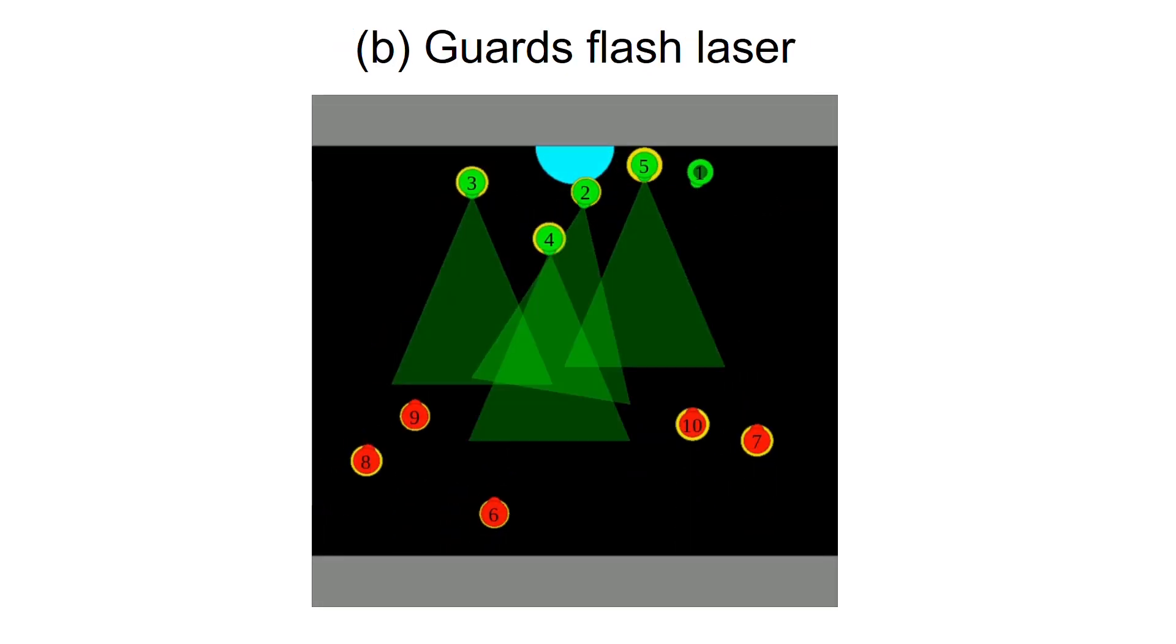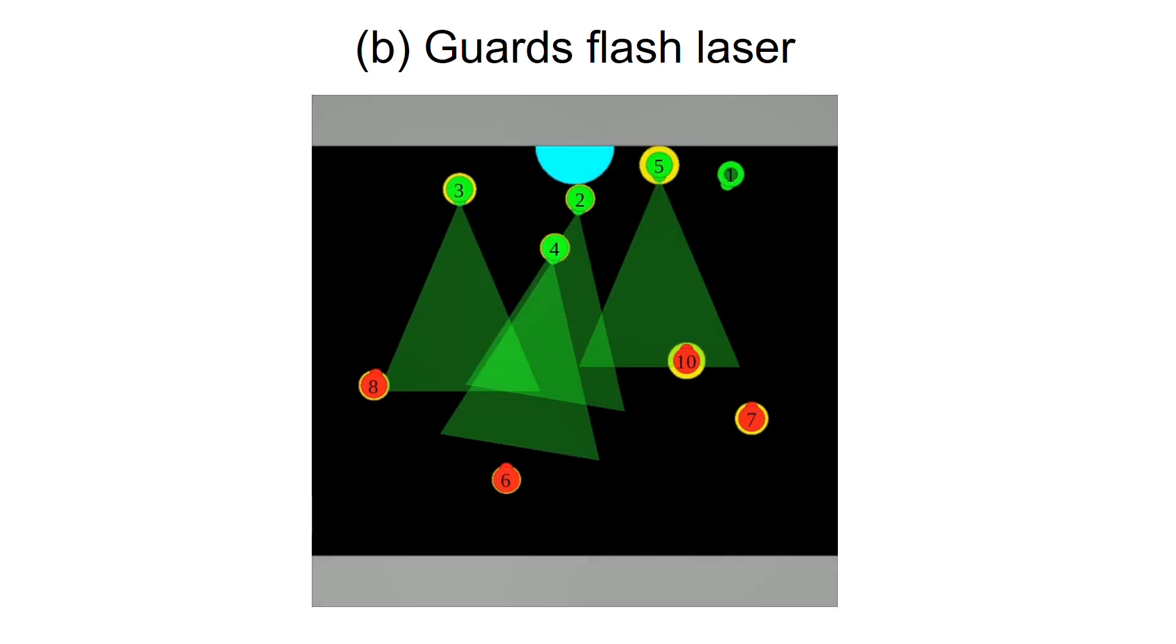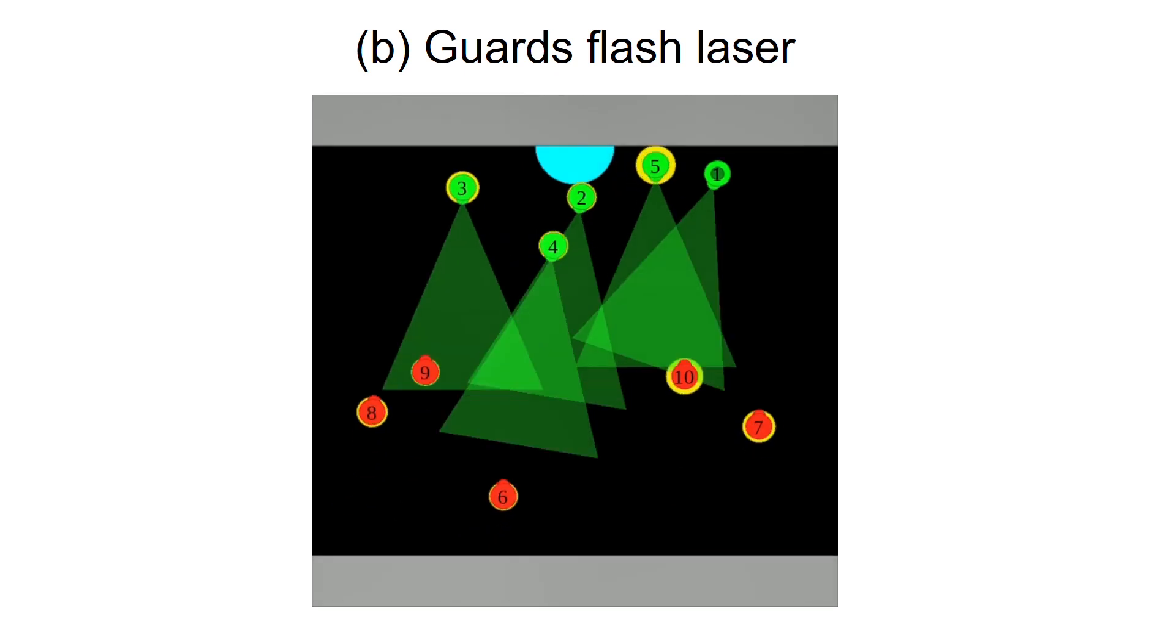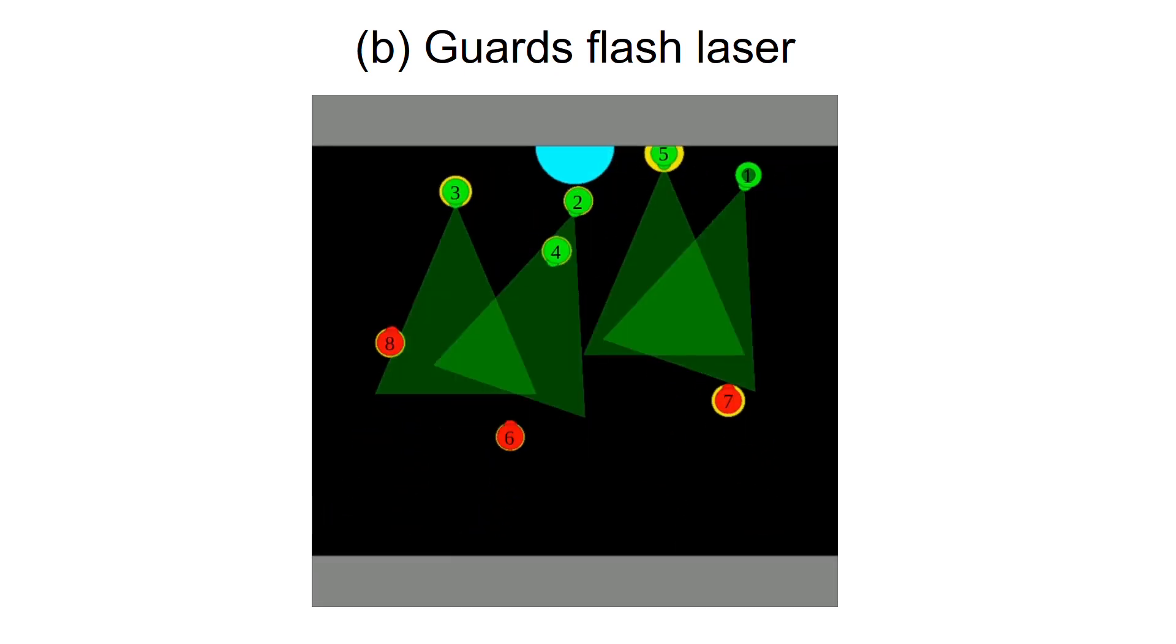Attackers eventually learn to approach the fort and the guards adopt a simple strategy to win. They all continuously flash their lasers creating a protection zone in front of the fort which kills any attacker that tries to enter.